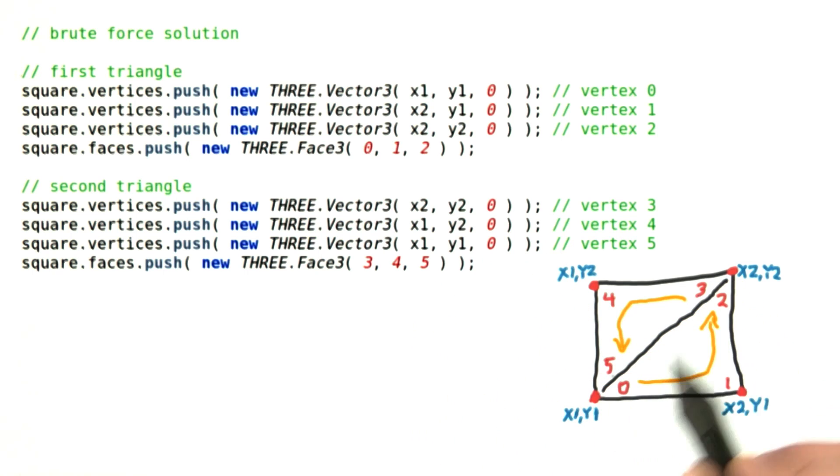Now you'll notice there's duplication of points 2 and 3, and 5 and 0, and we can save space and time by merging these.